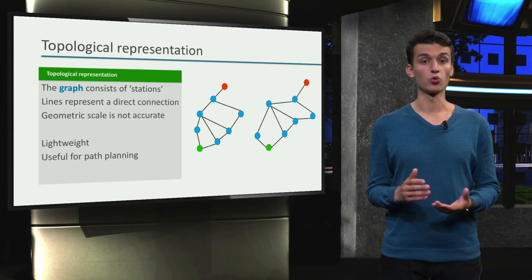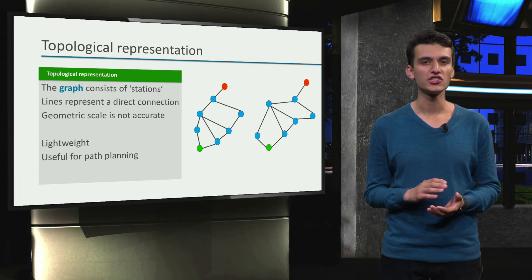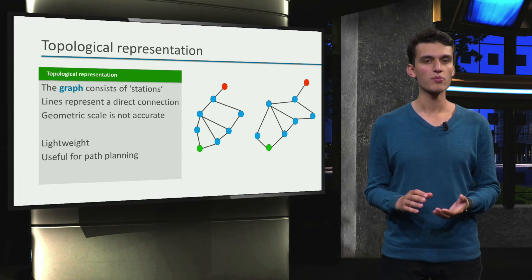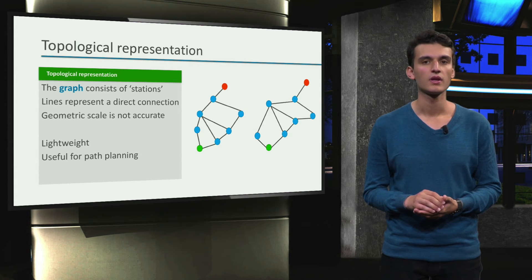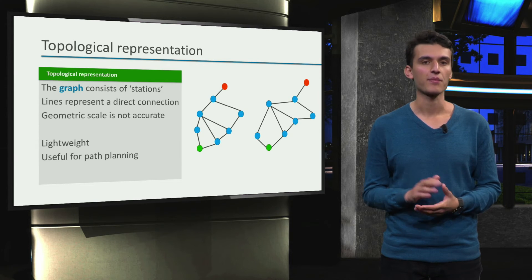Because we don't need to worry about scale and where each station exactly is, this representation is lightweight. It does not need much space to be stored. It's also useful for path planning.